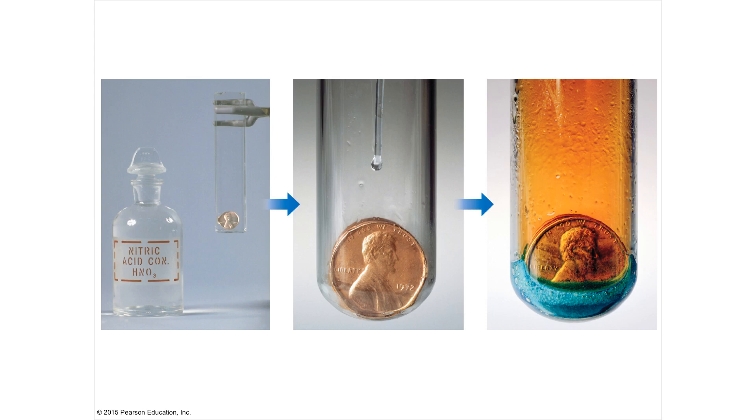So this is an example of a chemical change. So nitric acid on copper produces nitrous oxide, which is nice and poisonous. And then the copper turns into a copper solution. And you can see that with the green color. And there's a solution of copper. And the penny is actually corroding or being eaten away.